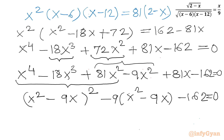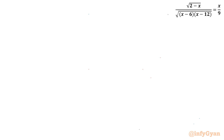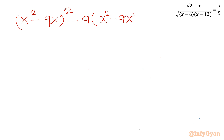This is a quadratic equation in (x squared minus 9x). Applying the quadratic formula with a equals 1, b equals minus 9, c equals minus 162, we get: (x squared minus 9x) equals 9 plus or minus square root of (81 plus 648), all divided by 2.